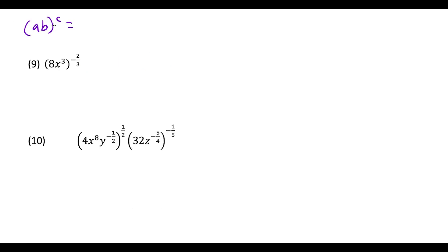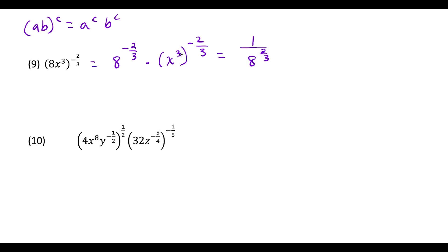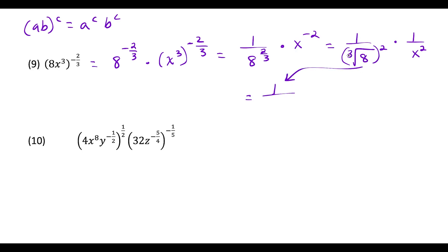For question 9, we use the rule that a product raised to a power means each term is raised to that power. We get 8 to the negative 2/3 times x^3 to the negative 2/3. Raising a power to a power: 3 times negative 2/3 gives x to the negative 2. For the 8 term, we write 1 over the cube root of 8 squared, which is 1 over 4. Combined with x to the negative 2 becoming 1 over x squared, our final answer is 1 over 4x squared.